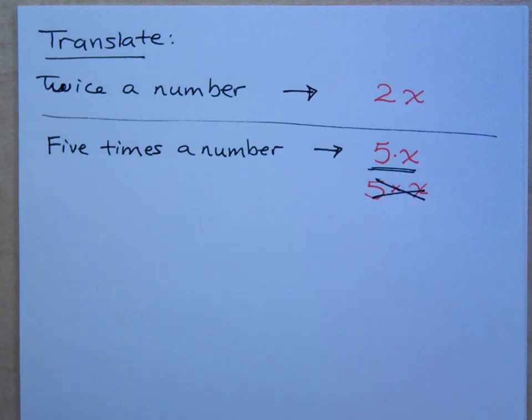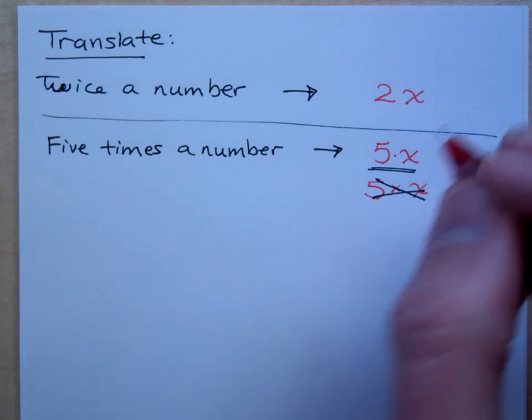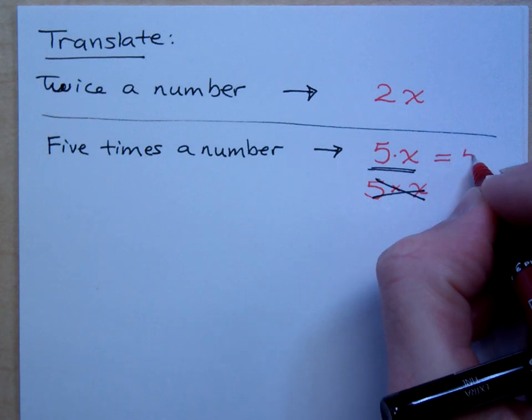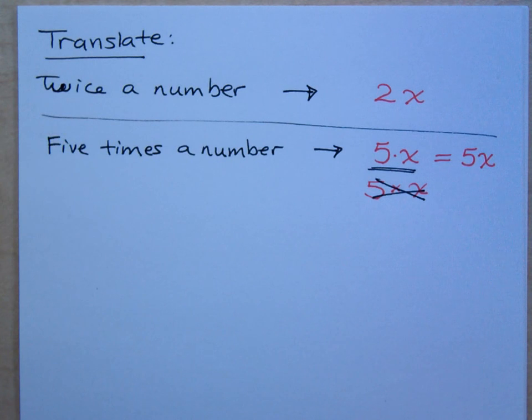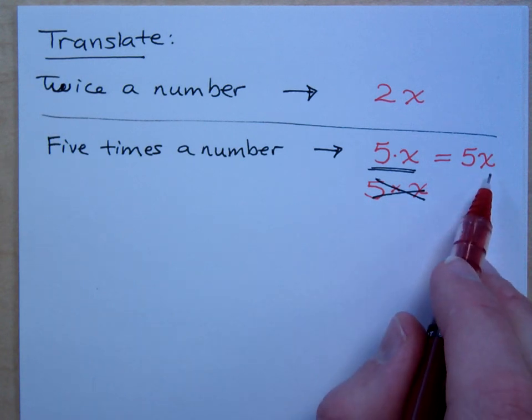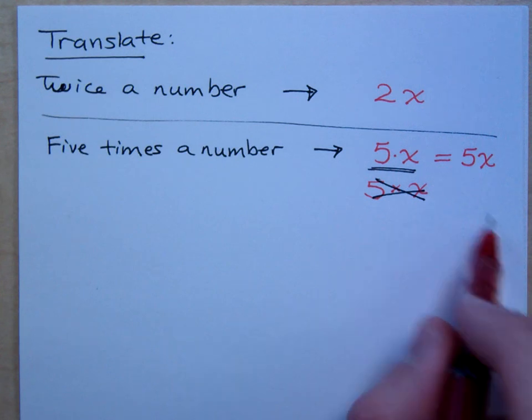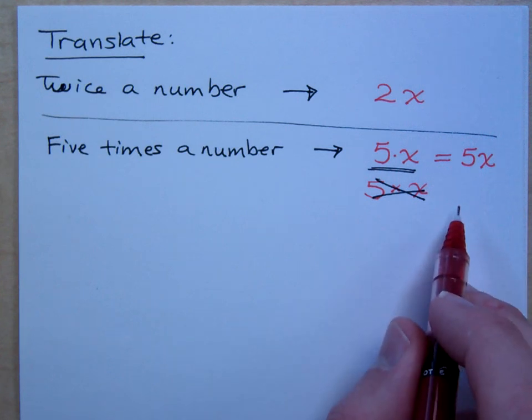Do this. I mean, and even then, you wouldn't even show that raised dot for multiplication. You would just write 5x like that. But you do want to get in the habit of writing your x's more script-like, as opposed to just going, like making a cross.